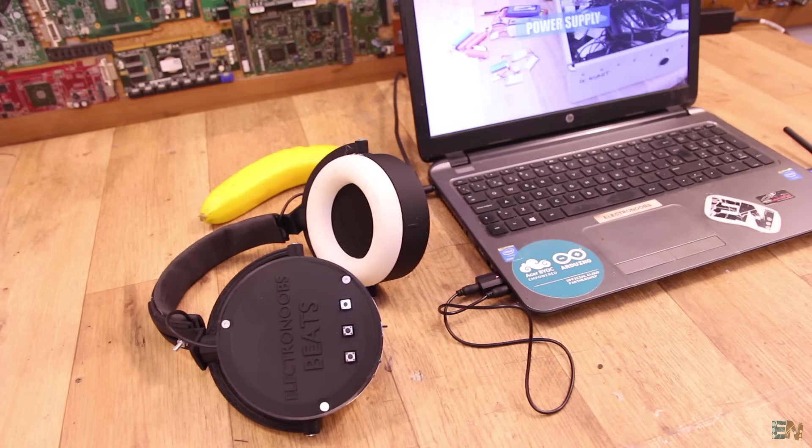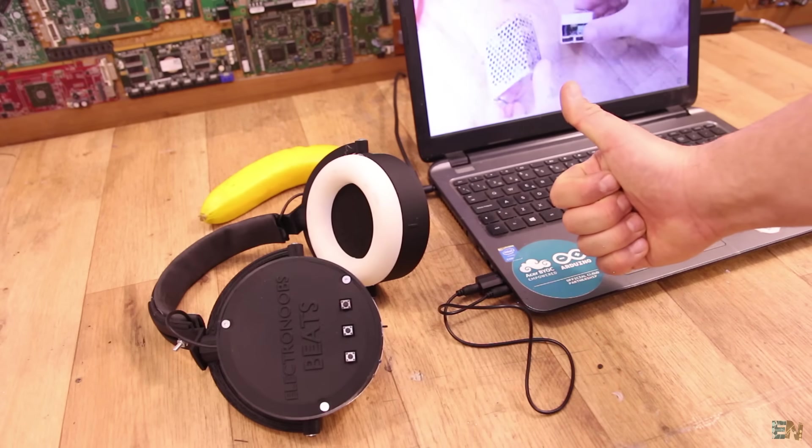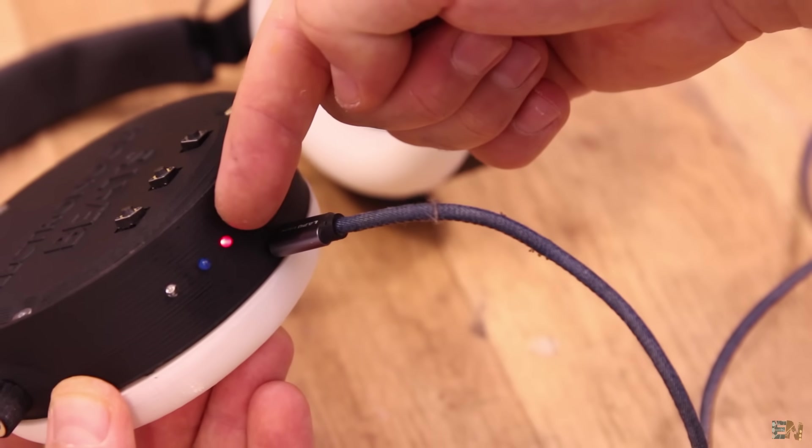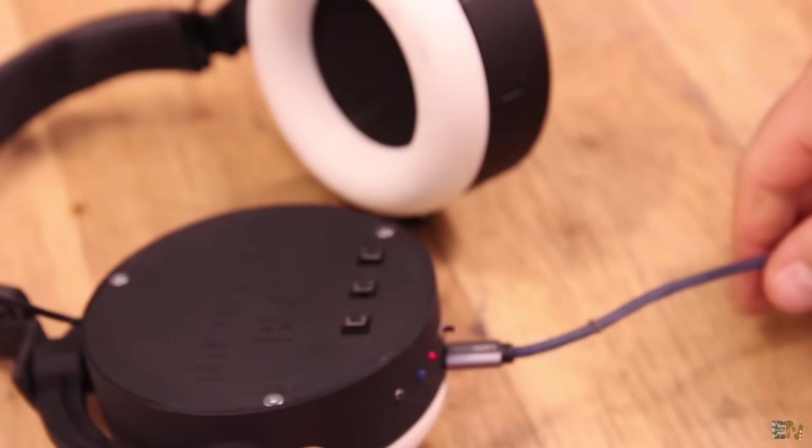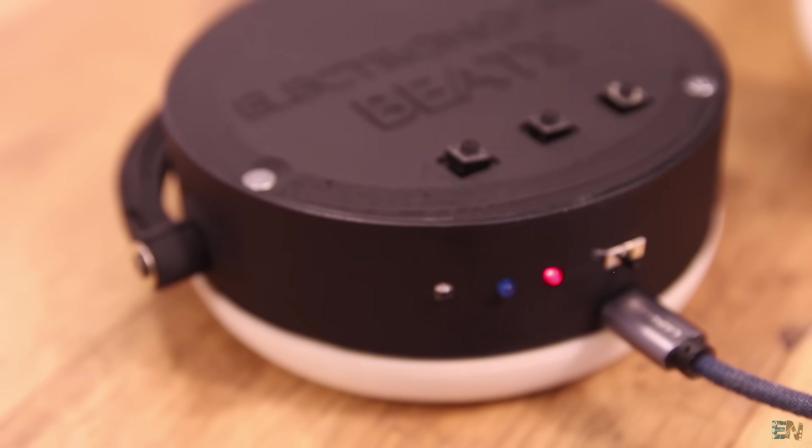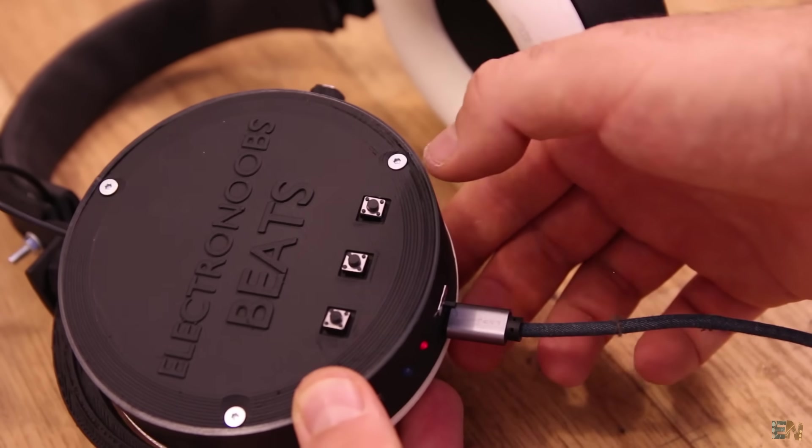When the battery is low, just plug in any 5V USB charger and wait 1 hour or so. While charging, the red LED is turned on and when the battery is full, the blue charging LED will turn on. Use the buttons for volume control or to change the song if you are connected to a smartphone.